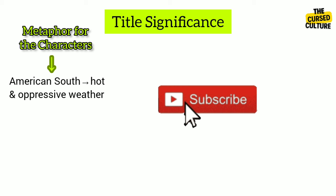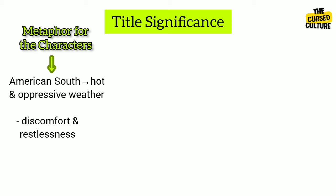The play is set in the American South, where hot and oppressive weather is a common backdrop. The title serves as a metaphor for the characters in the play who are in a state of discomfort, restlessness, and tension.